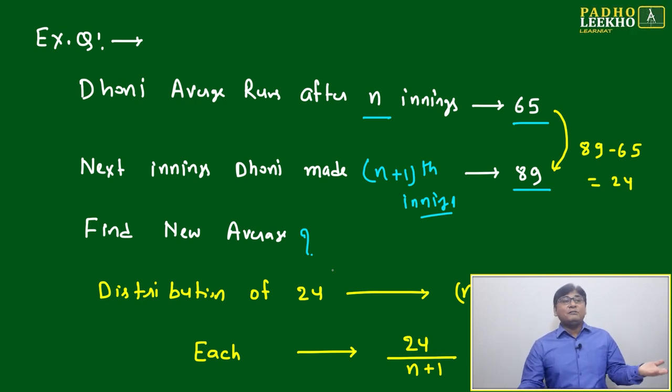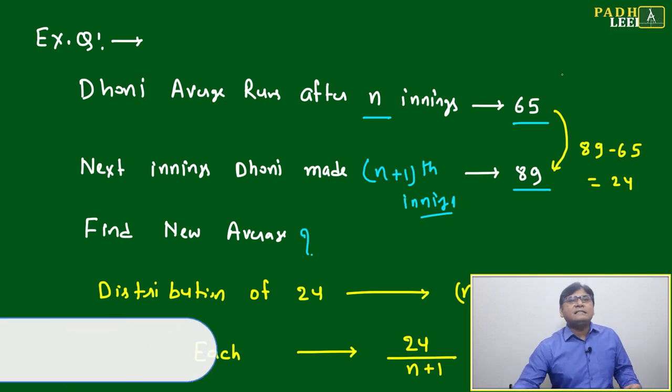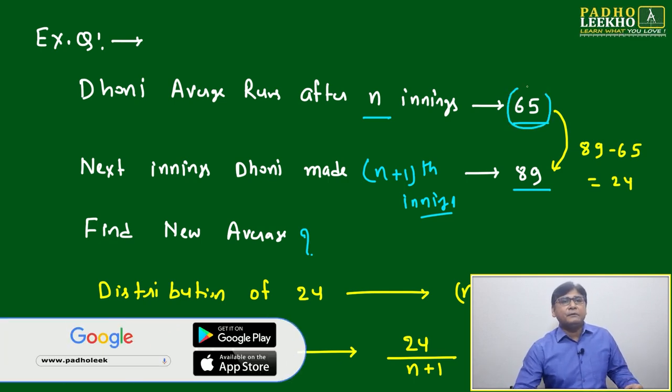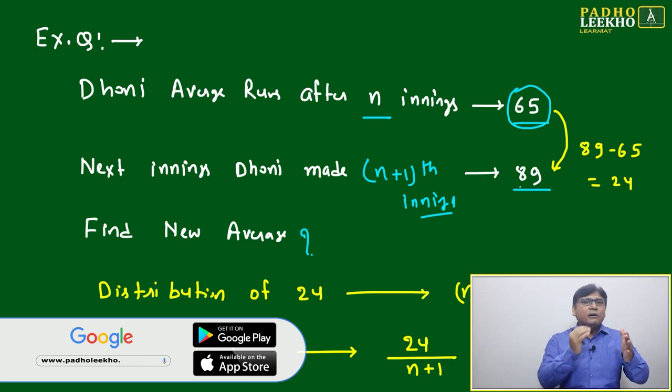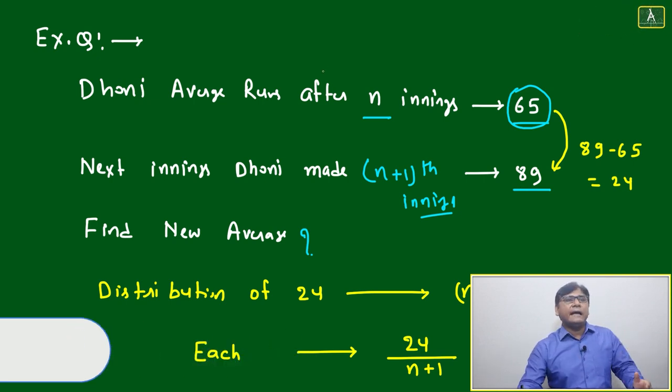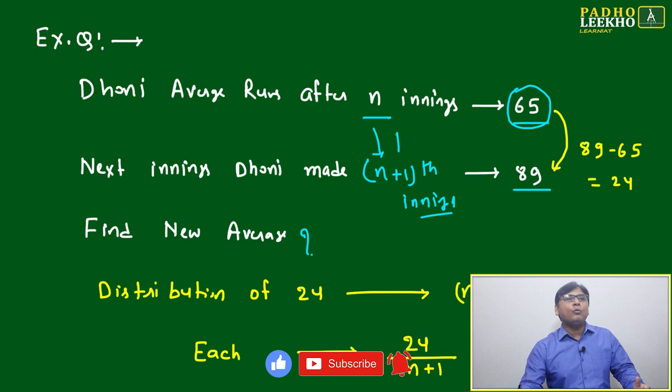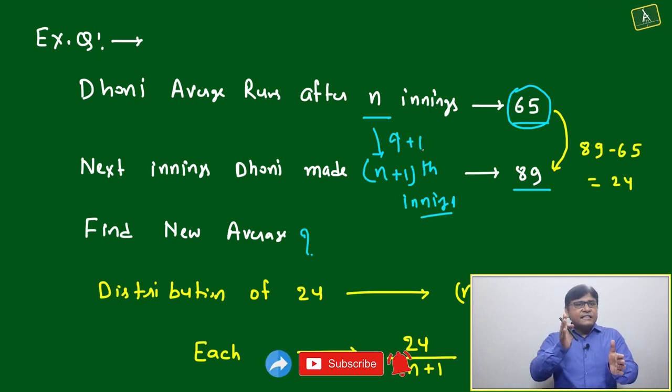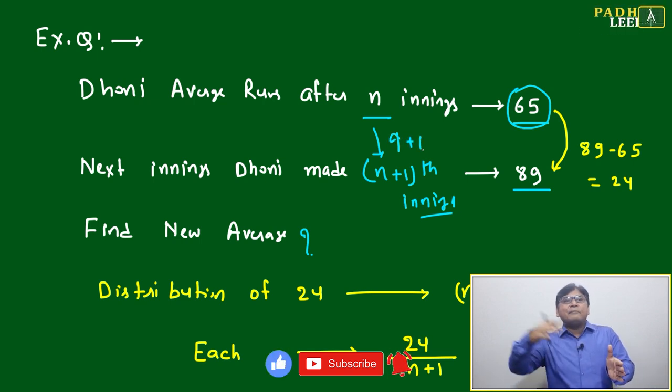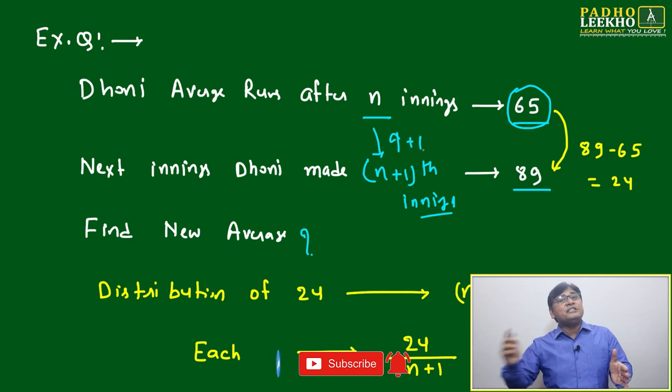What will happen here? The existing average is 65. Next inning he has made 89, meaning the number is increasing. n is increasing by 1 - earlier n innings, now it increased by 1. n is increasing, sum will increase, average will increase or maybe decrease depending on the number we are adding.